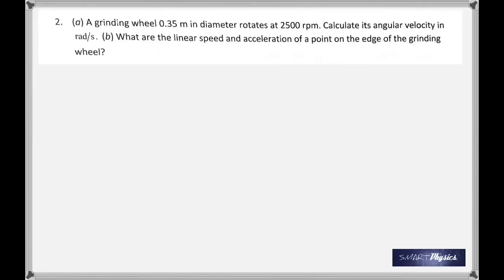Rotations per minute won't work in physics because time must be in seconds. So you have to convert rotations per minute into rotations per second by dividing by 60, because the number of rotations in one second is less than in one minute.